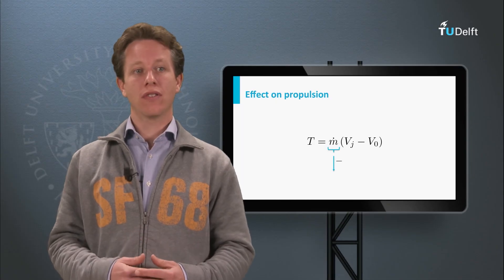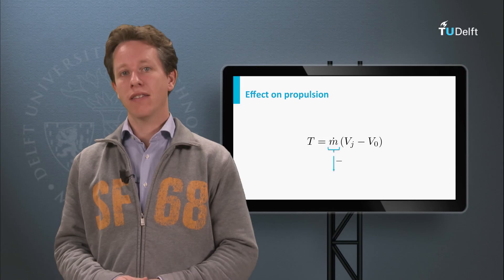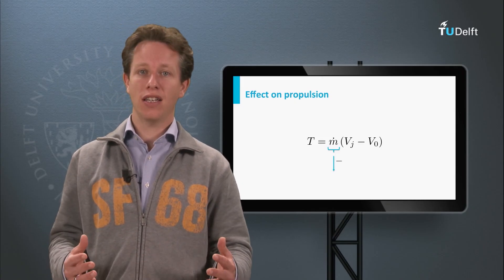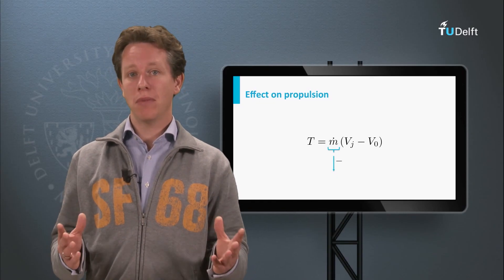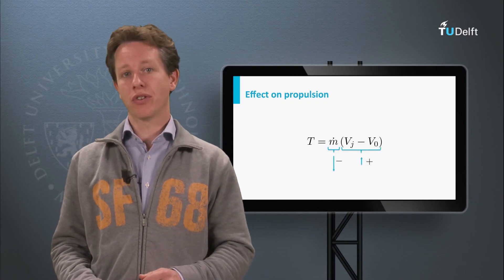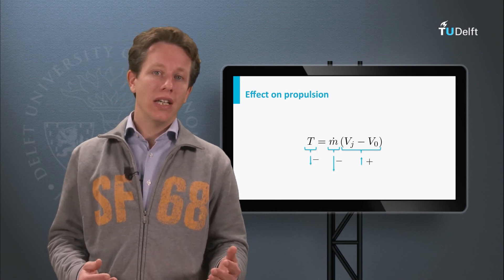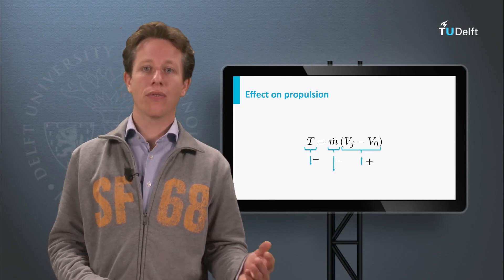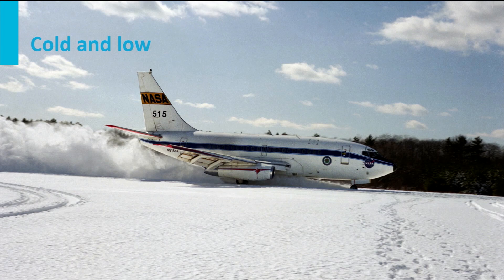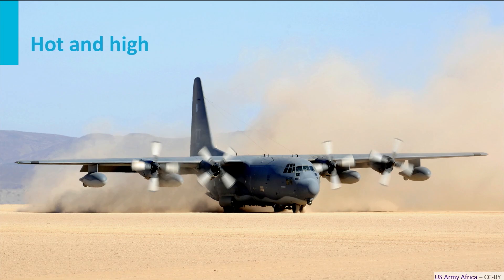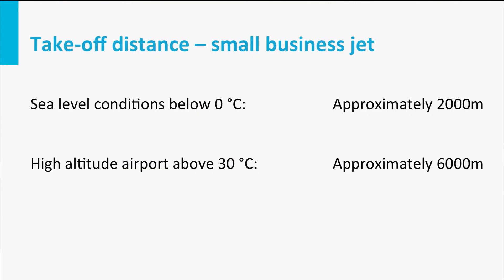If we keep all other factors constant, the thrust level goes down. On the other hand, colder air allows more energy to be put into the air inside the engine, since combustion chamber operation is limited by maximum material temperature. But in general terms, the mass flow effect is always dominant, and thrust — and thereby power available — reduces with increasing altitude. In cold conditions at low altitude, aircraft can generate a lot of thrust, whereas maximum thrust is very low in hot and high conditions. As an example, take-off distance for a small business jet is about 2,000 meters in cold and low conditions, but 6,000 meters in hot and high conditions — a factor of 3 difference.